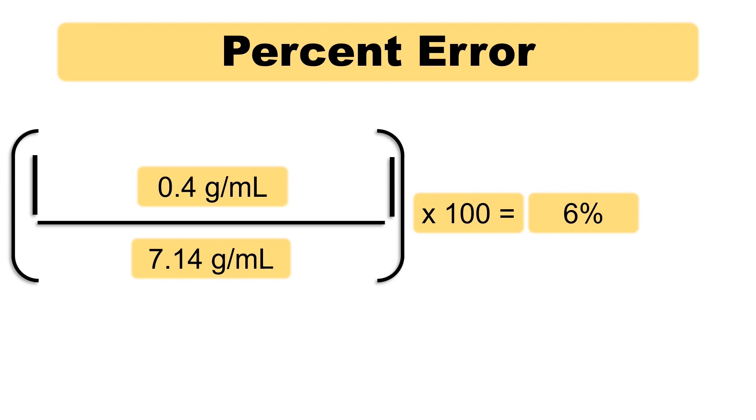Percent errors less than 5% are generally acceptable in a chemistry lab. However, I'm not surprised by this error, seeing as we use the less precise 100 milliliter cylinder to measure the volume. Now, let's find the density of liquids using a more precise cylinder, and we'll find much less error.